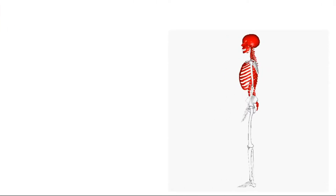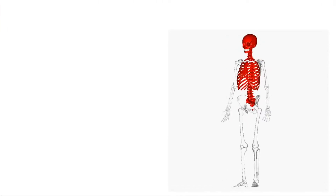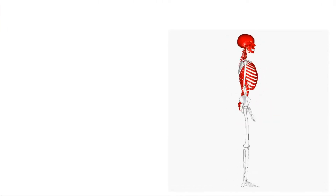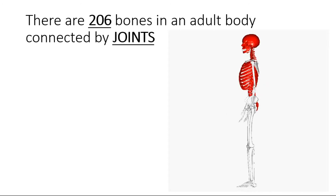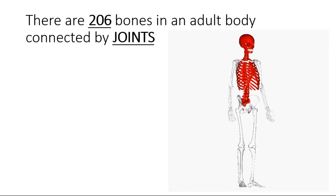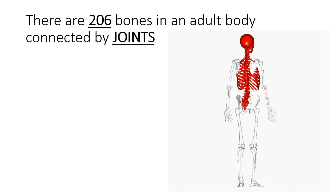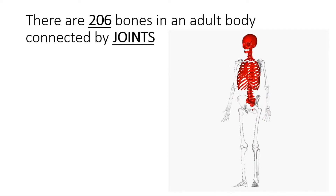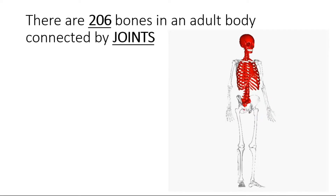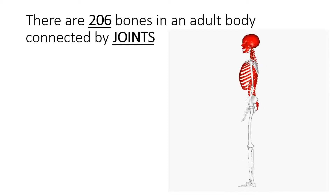Human skeleton system. There are 206 bones in an adult body, connected by joints. In babies, you will have more number of bones.